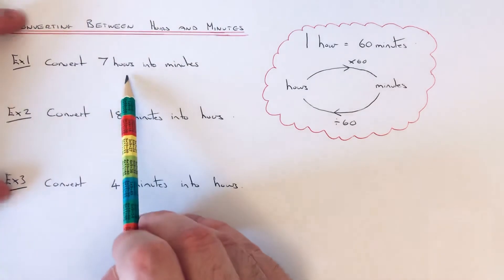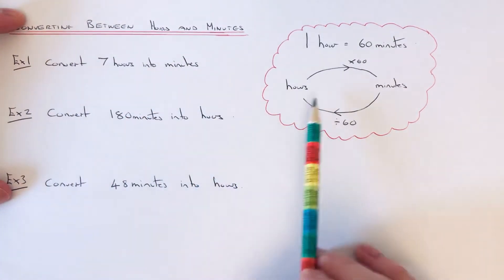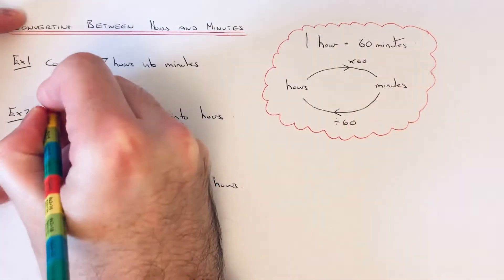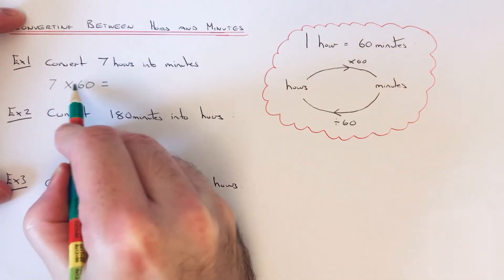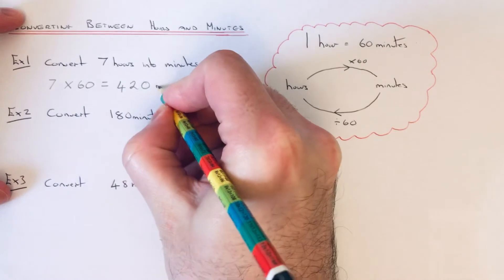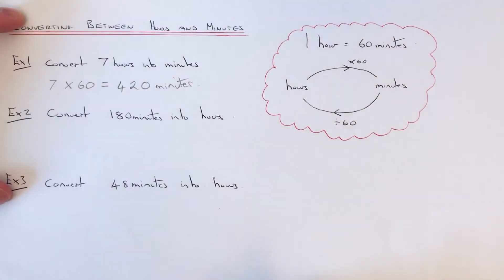Let's have a look at our first example. We're going to convert 7 hours into minutes. So hours into minutes, we multiply our number by 60. 7 times 60 is 42 plus 0, so we get 420 minutes.